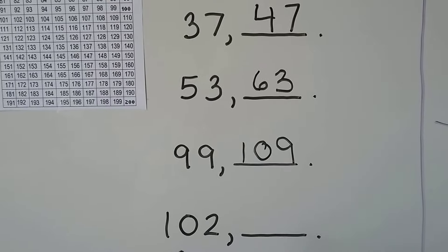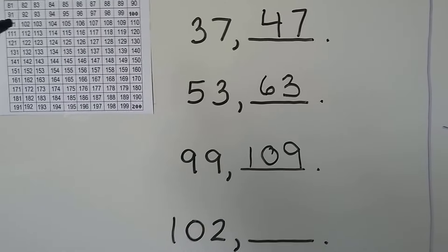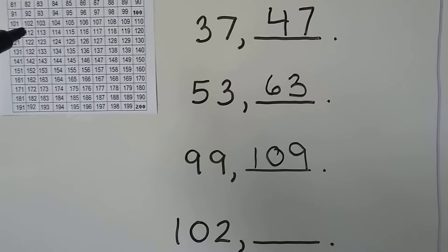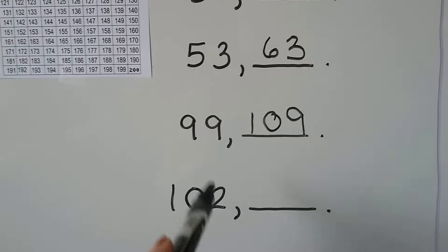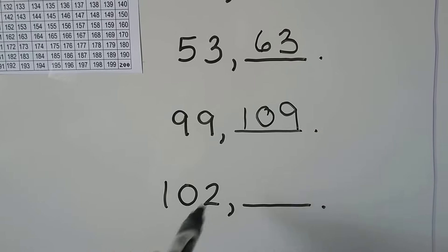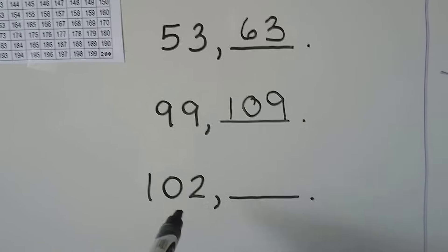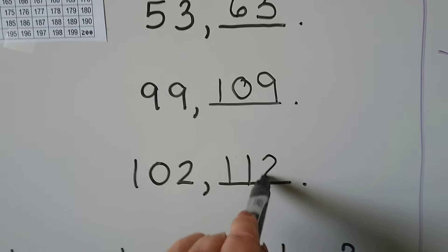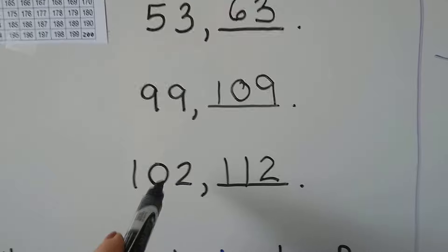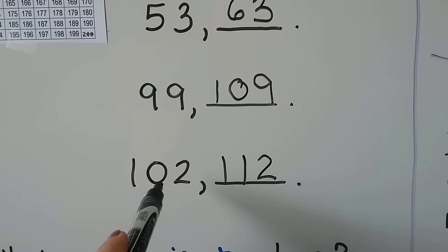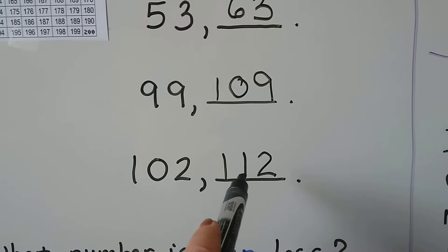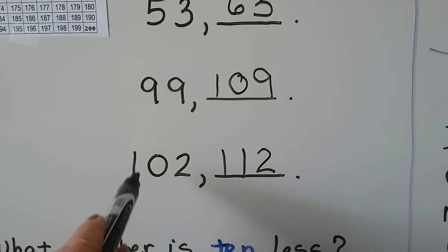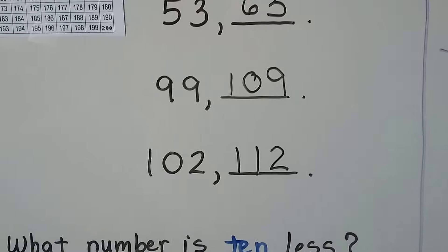What about 102? We find 102 on the chart — here it is. We go down one row and we have 112. You can think of the tens digit as a 10, and the next one would be an 11, and the ones place stays the same as a 2. The tens place went up by 1 — it went from a 0 to a 1 — and the ones place stayed the same. And look, the number in the hundreds place stayed the same also.